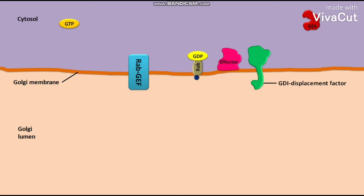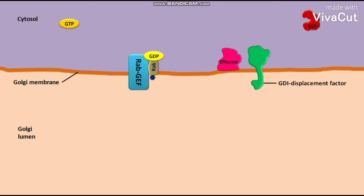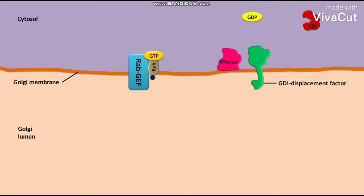In this case, the membrane has a specific Rab-guanine nucleotide exchange factor, or Rab-GEF. The inactive Rab-GDP then binds to the Rab-GEF. The Rab-GEF then causes the exchange of GTP for the GDP on the modified Rab. This exchange forms an active Rab-GTP.